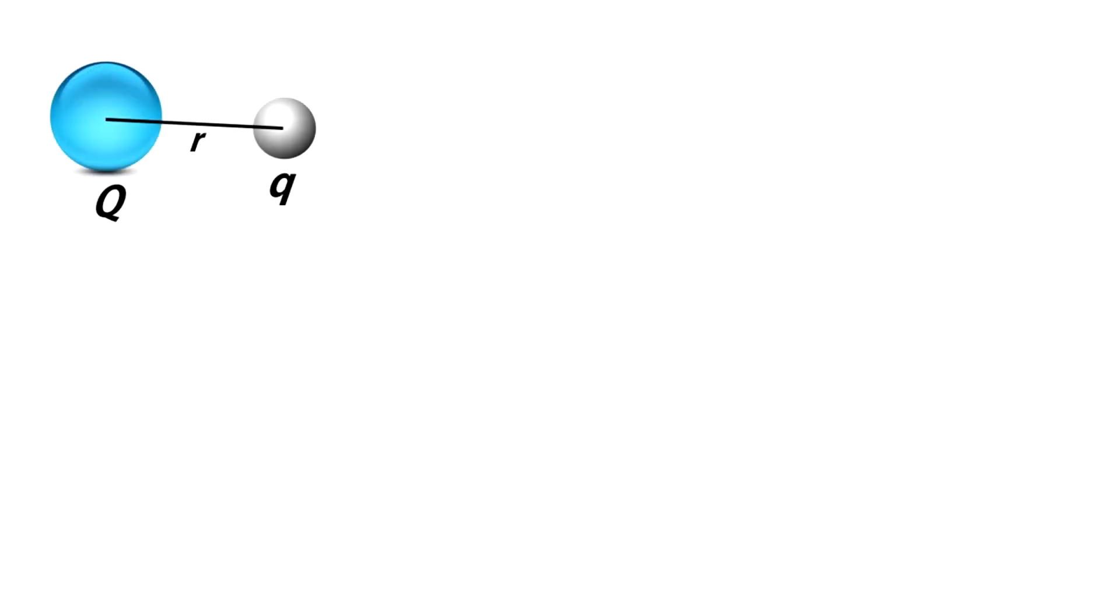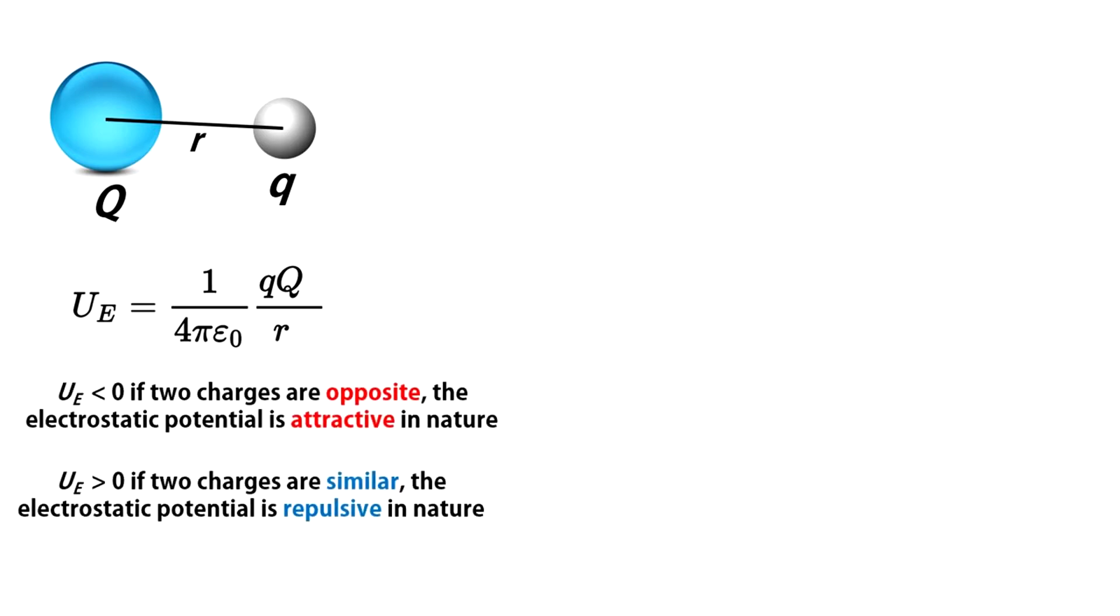Imagine a system of two point charges separated by a distance r. The potential energy of the system is given by this expression. Now, if the two charges are opposite, the potential energy is negative, means there is an attractive potential. The two charges tend to be close to each other. If the two charges are similar, the potential energy is positive. This signifies a repulsive potential, means two charges tend to go away.